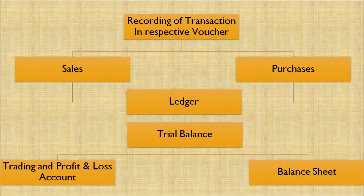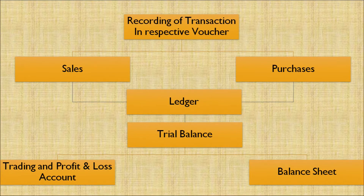Let's now discuss the roles of a computer in accounting. While recording a transaction in the respective accounting vouchers — such as sales and purchase — both go into the ledgers, and the ledgers impact our trial balance. After preparing a trial balance, there is a trading account, a statement of profit and loss account, and a balance sheet. All these accounting entries can be passed through the computer and computer systems.